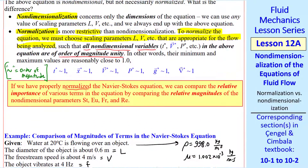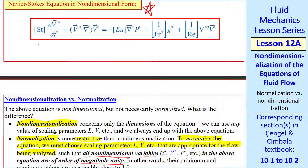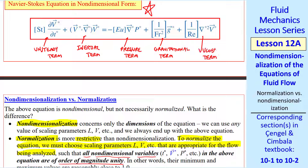Going back to the non-dimensional Navier-Stokes equation, let me put labels on the terms for future reference: the unsteady term, the inertial term, the pressure term, the gravitational term, and the viscous term. Depending on the characteristic scales of the problem, one or more of these terms may be negligible. In our example the viscous term was negligible; in other problems the unsteady term might be negligible, or perhaps all terms could be negligible except two. I'll use these names to refer to terms we neglect when forming approximate equations. We'll discuss several different kinds of approximate solutions in the following lessons.